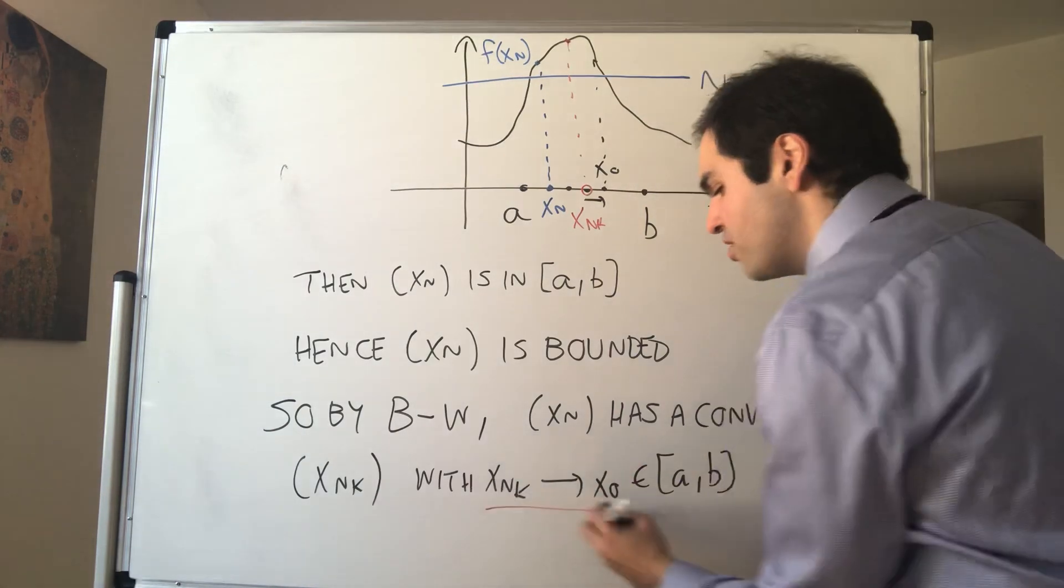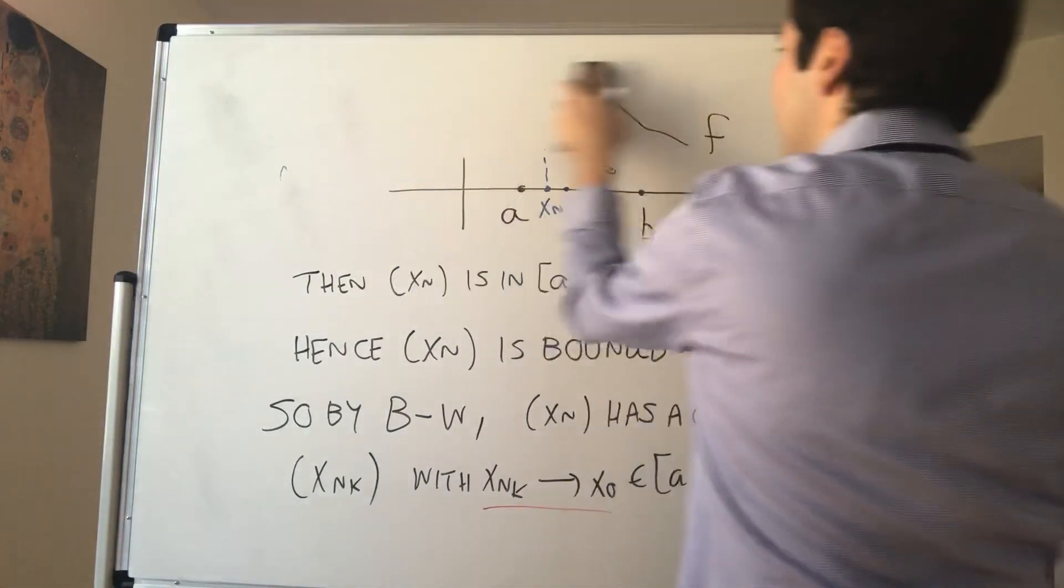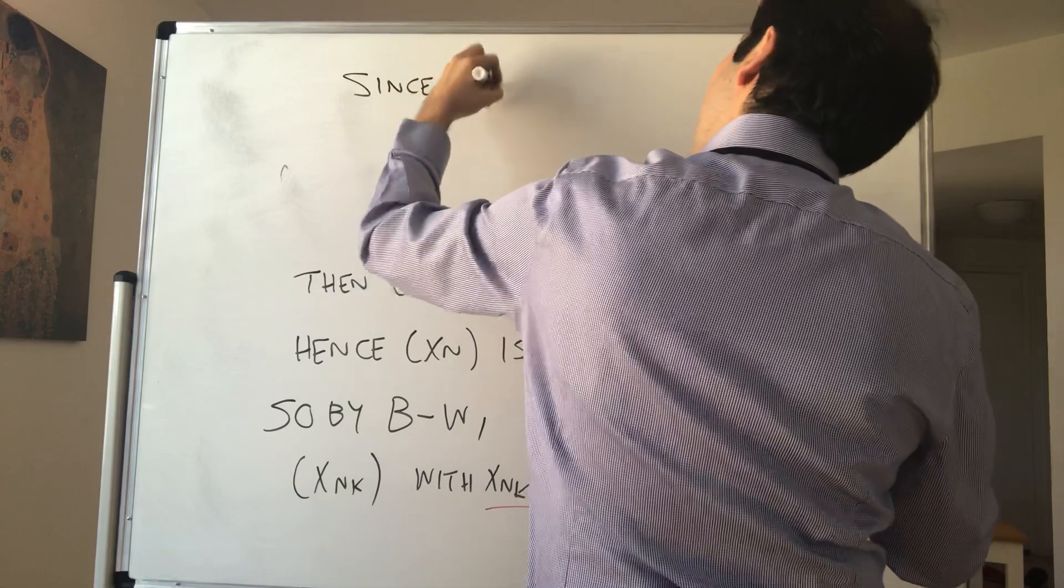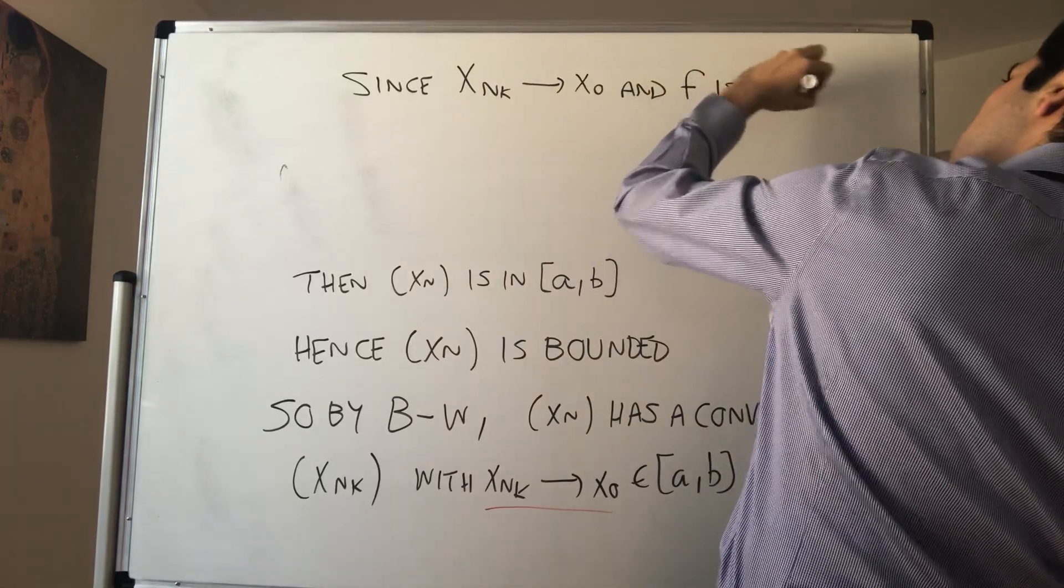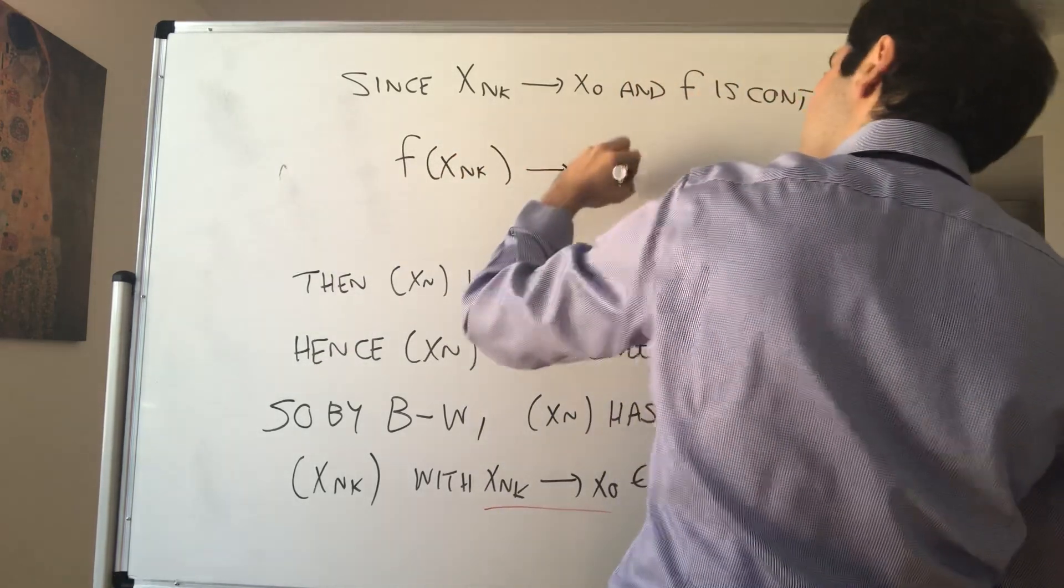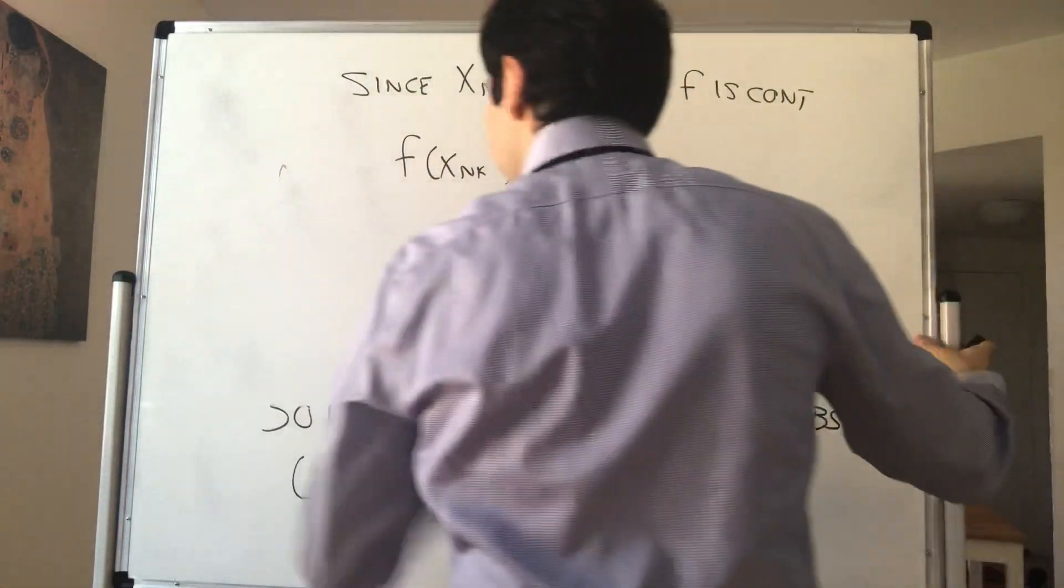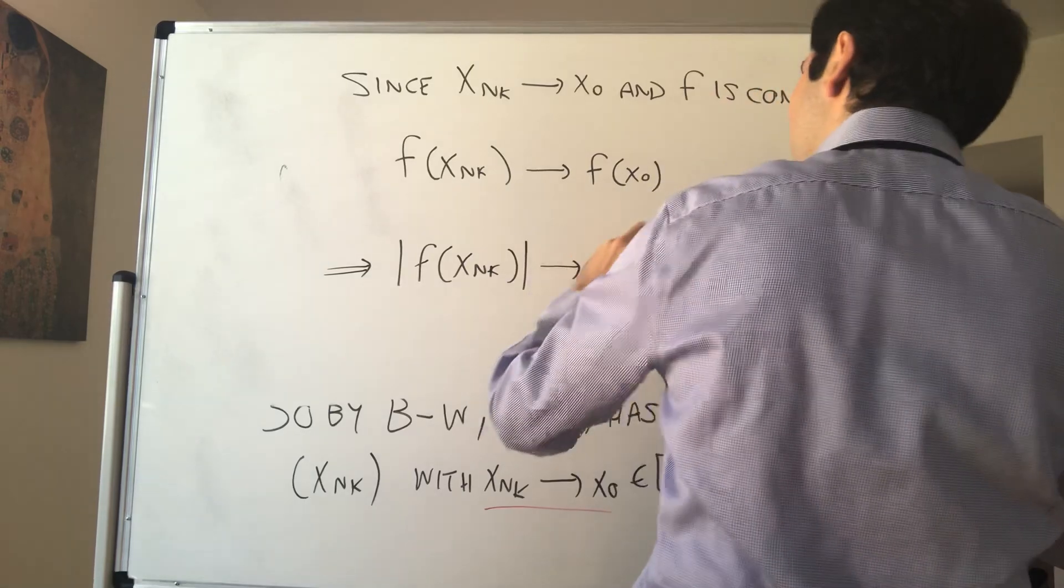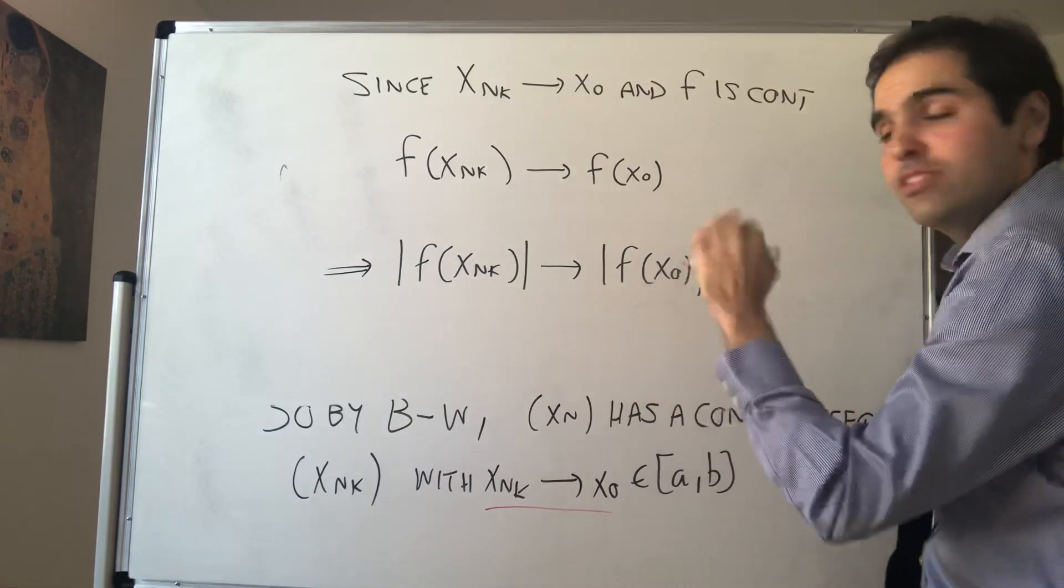Alright. Now, let's use the fact that this converges. So since this converges and f is continuous, we can apply f to the convergence. So since xₙₖ → x₀ and f is continuous, then we get f(xₙₖ) → f(x₀). And in particular, the same thing is true for absolute values. So therefore, |f(xₙₖ)| → |f(x₀)|. And the point is, this is a finite number.